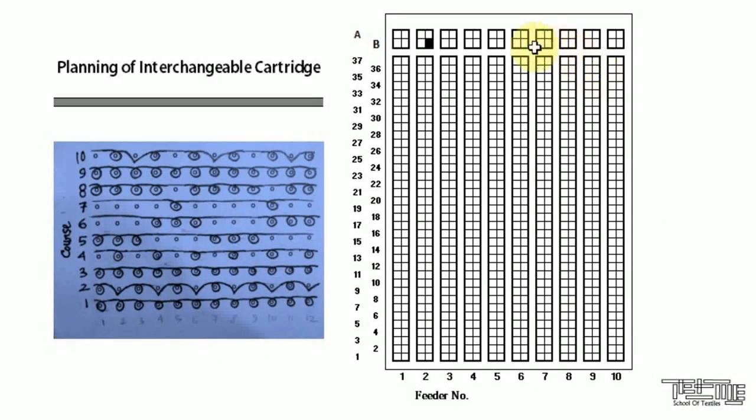In the third course, all are again knit loops. In the fourth course, there is miss and knit. So a slot is made miss loop and B for knit.